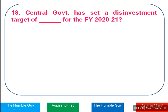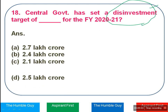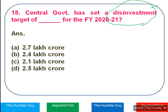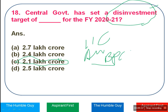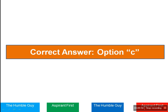Central Government has set a disinvestment target — this is a very important topic, double mark it. The options are 2.7 lakh crore, 2.4 lakh crore, 2.1 lakh crore, or 2.5 lakh crore. The correct answer is Option C — 2.1 lakh crore. The government is planning to list in the share market and sell Air India, LIC, and BPCL (Bharat Petroleum Corporation Limited). These are the three major ones. The government has a target to complete disinvestment in the next financial year.